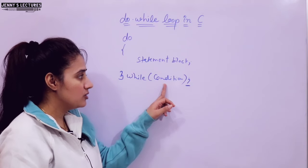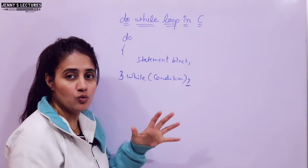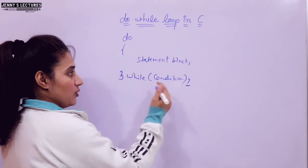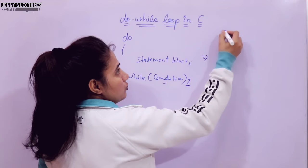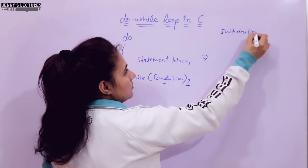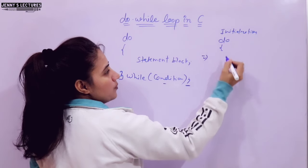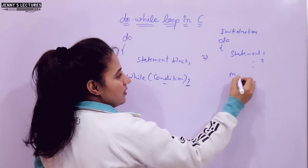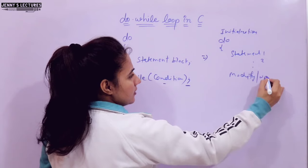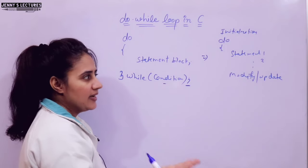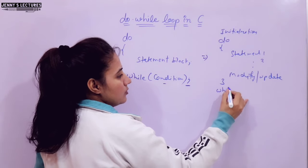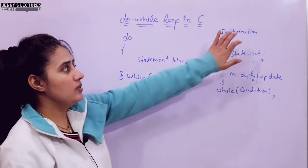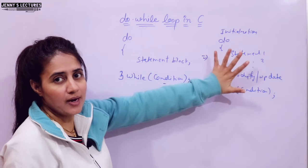The initialization also needs to be done, because here we are only seeing the condition. Three factors are there with any loop: initialization, condition, and the third one is increment or decrement, also called the update or modify expression. So before starting the do-while loop, we do initialization. Then in the body we write statements to be executed and also write the increment or decrement expression. After that, we write the while condition and terminate it with a semicolon.